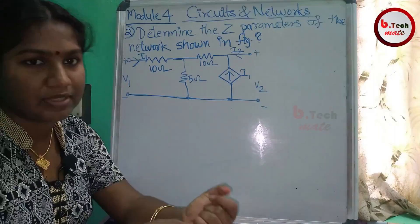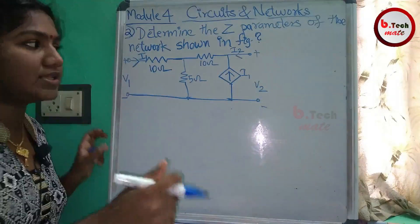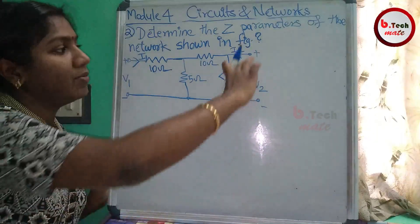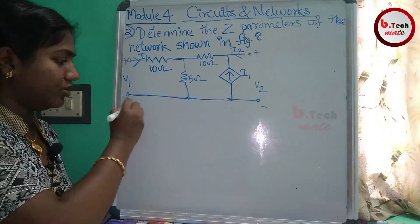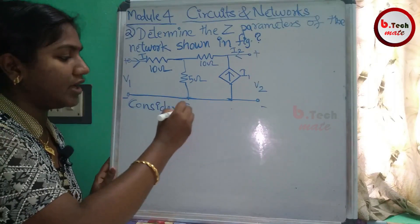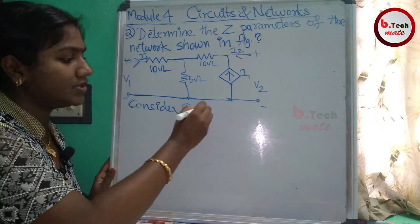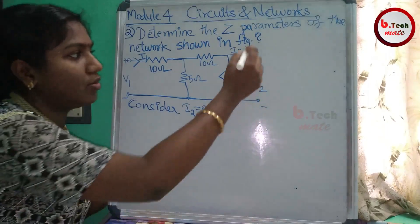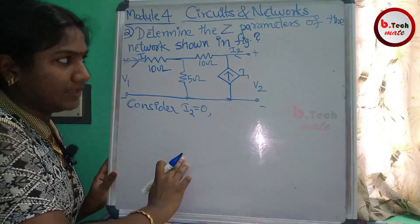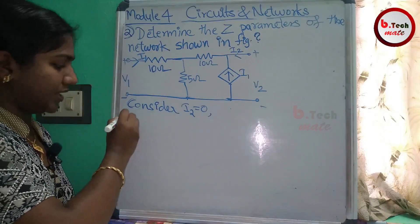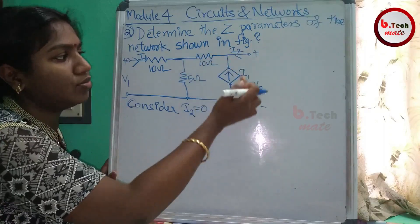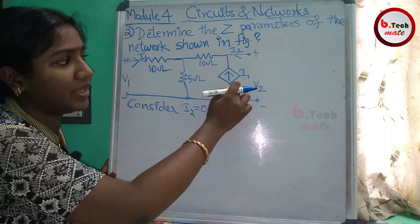We have Z-parameters to find. We set the output side to open circuit. I have to open the output port, so I2 equals 0. If the output port is open, then I1 equals 0.